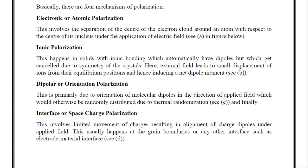The last type is interface or space charge polarization. This involves limited movement of charges resulting in alignment of charge dipoles under an applied field. It usually happens at the grain boundaries or other surfaces and interfaces, such as the electrode-material interface.